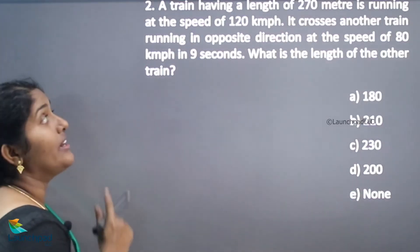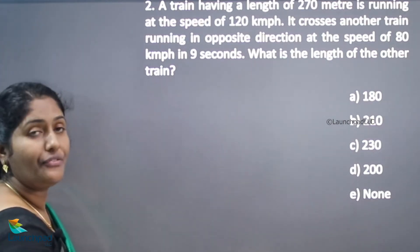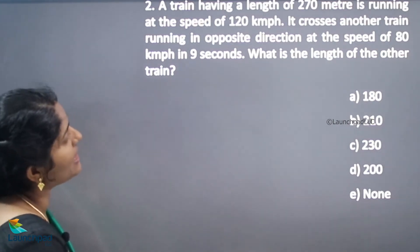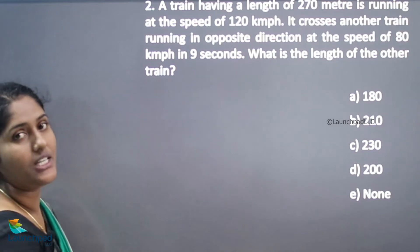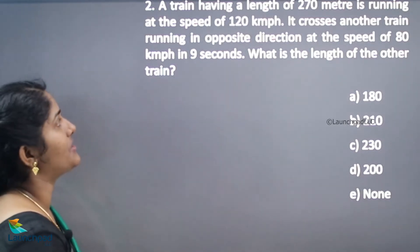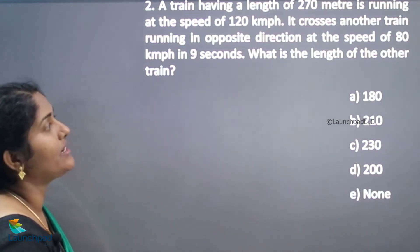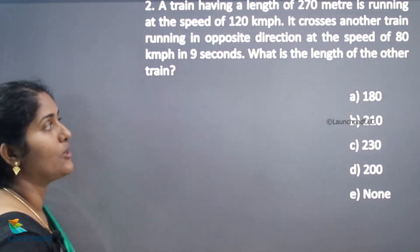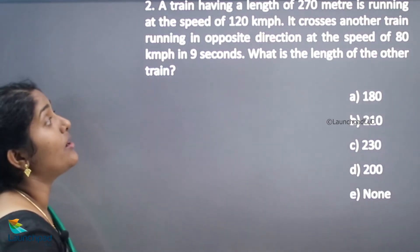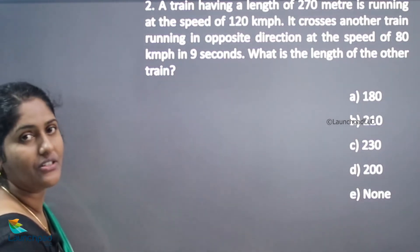The next question: a train having a length of 270 meters is running at the speed of 120 kilometers per hour. It crosses another train running in the opposite direction at the speed of 80 kilometers per hour in 9 seconds. What is the length of the other train?